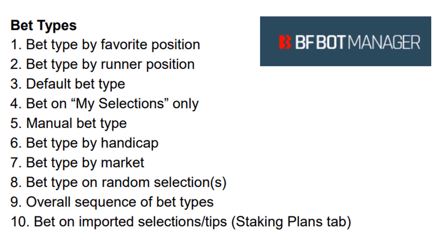The most commonly used bet types are: bet type by favourite position, bet type by runner position, default bet type, and bet on my selections only. Other bet types available are: manual bet type, bet type by handicap, bet type by market, bet type on random selections, overall sequence of bet types, and bet on imported selections and tips. Bet on imported selections and tips is the only bet type rule not found in the selections conditions tab — it is found in the staking plans tab.